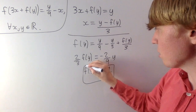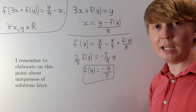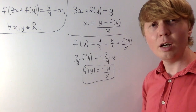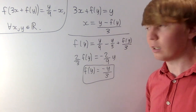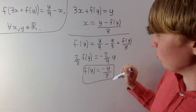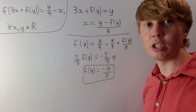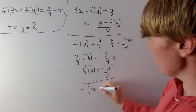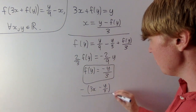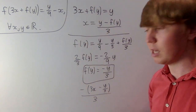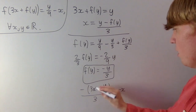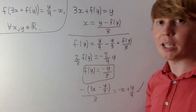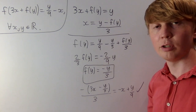We're claiming that this is going to be the solution to our equation, and this is definitely the only solution if it has one. But we do need to check whether this is actually a solution. We'll verify: if f(y) equals minus y over 3, we check whether this works with our original equation. We end up with minus 3x plus f(y), giving us minus y over 3, all divided by 3. Making sure this equals y over 9 minus x — cancelling, you get minus x and plus y over 9, which is what we want. So this is indeed the only solution.